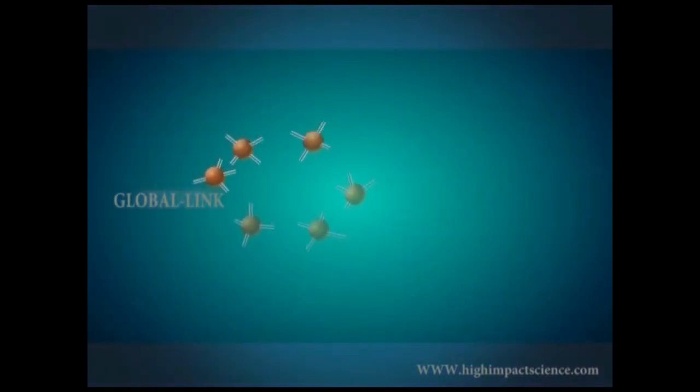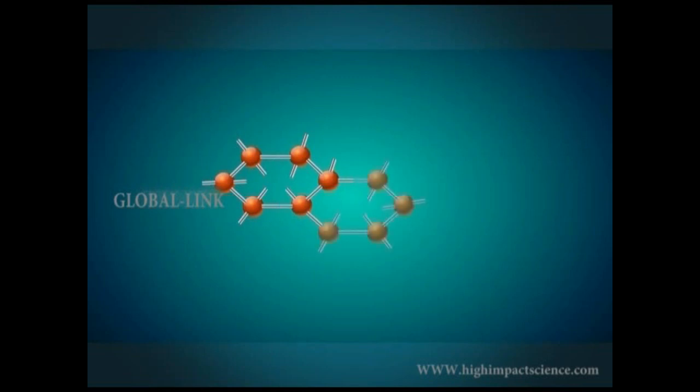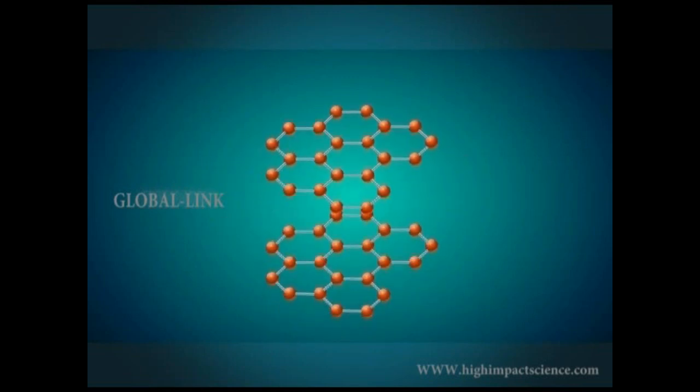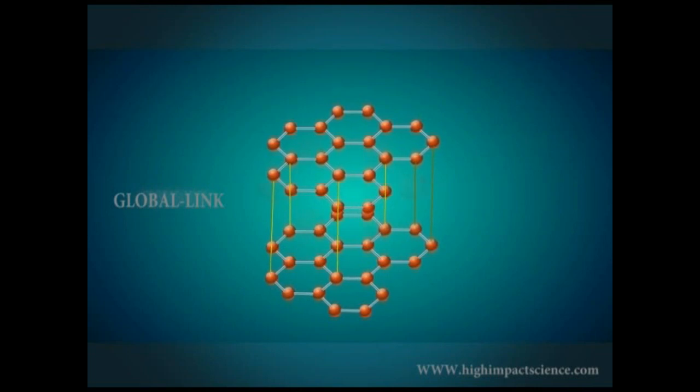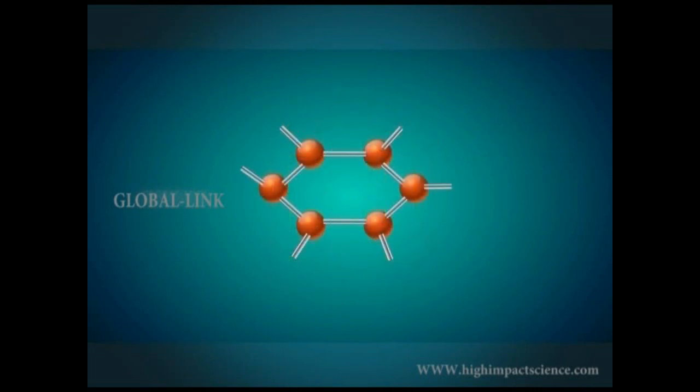In graphite, each carbon atom is bonded to 3 other carbon atoms by covalent bonds, resulting in hexagonal rings which are arranged in layers above each other. One of the carbon-carbon bonds is a double bond, and thus the valency of carbon is satisfied.